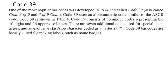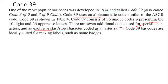One of the most popular barcodes was developed in 1974 and is called Code 39. Code 39 uses alphanumeric code, similar to ASCII code. Code 39 consists of 36 unique codes representing the 10 digits and 26 uppercase letters. There are seven additional codes used for special characters, and an exclusive start/stop character coded as an asterisk.